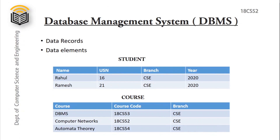Now we will move to an example of a database system. In a database system, we identify two things: one is data record and the second is data elements. Consider a student database system. In this, name, USN, branch, and year are known as data records. And Rahul, Ramesh, 16, 21, CSE, 2020 are data elements.